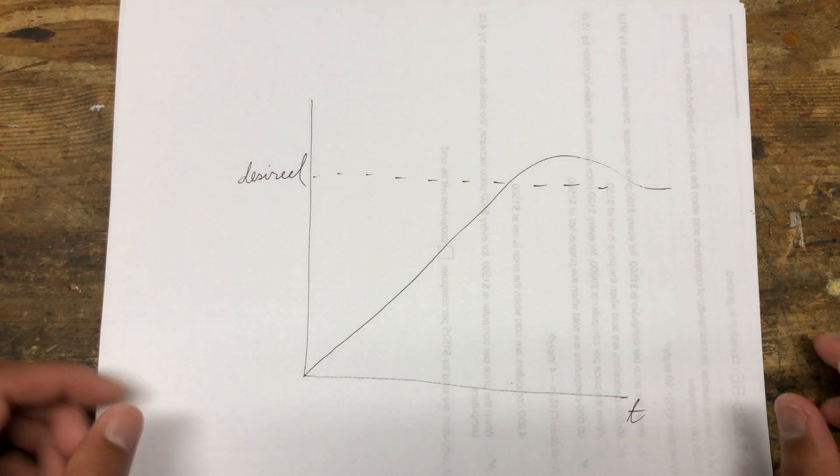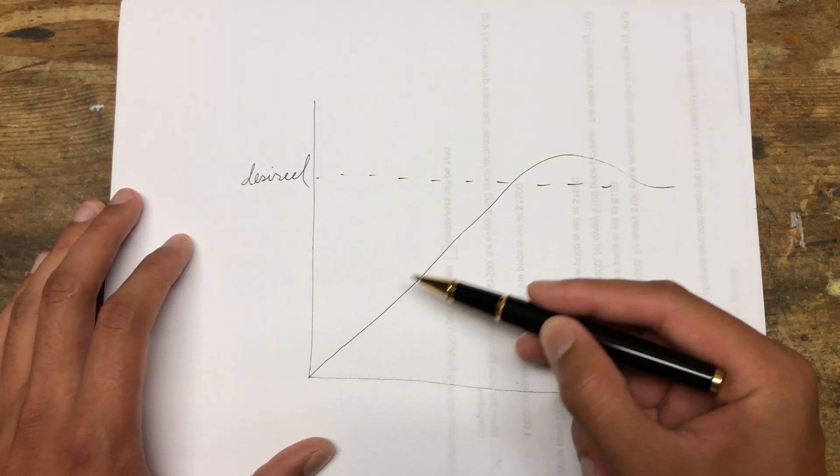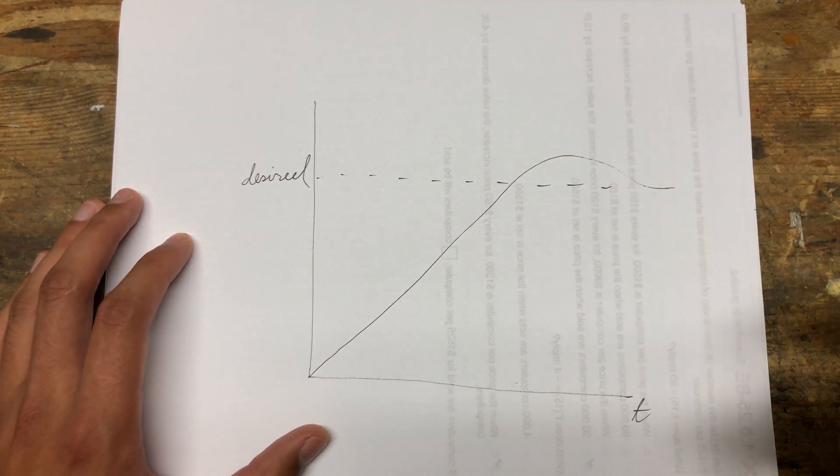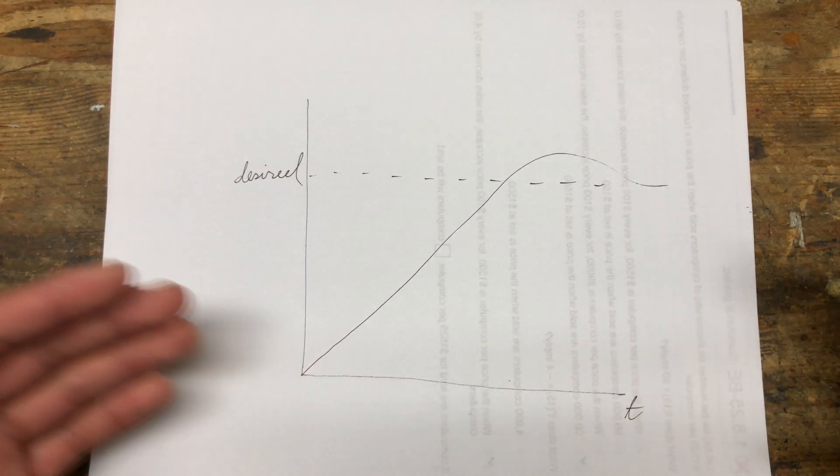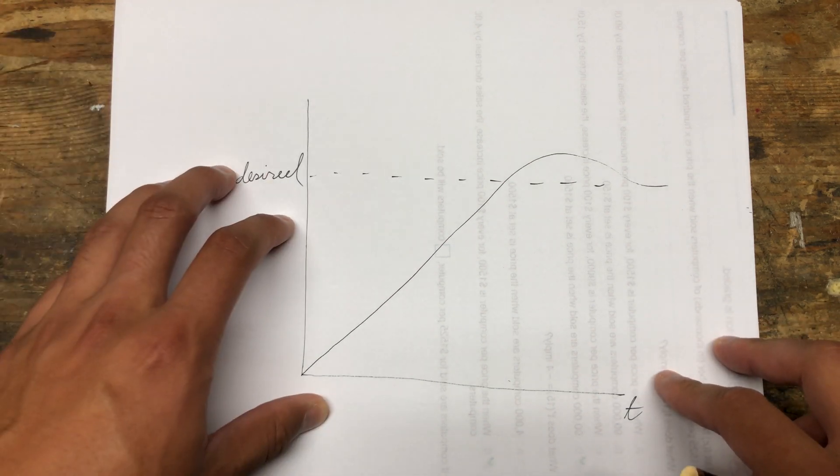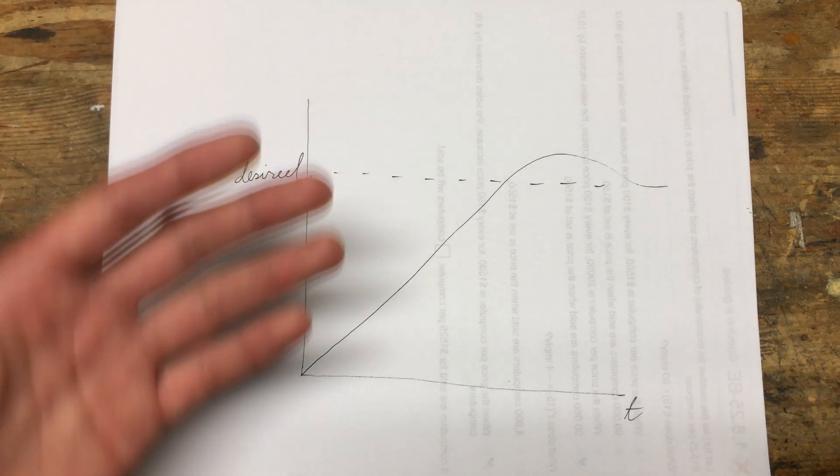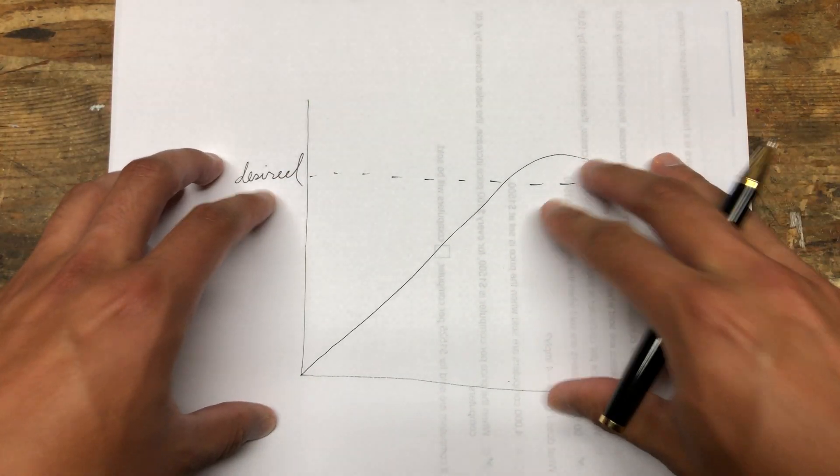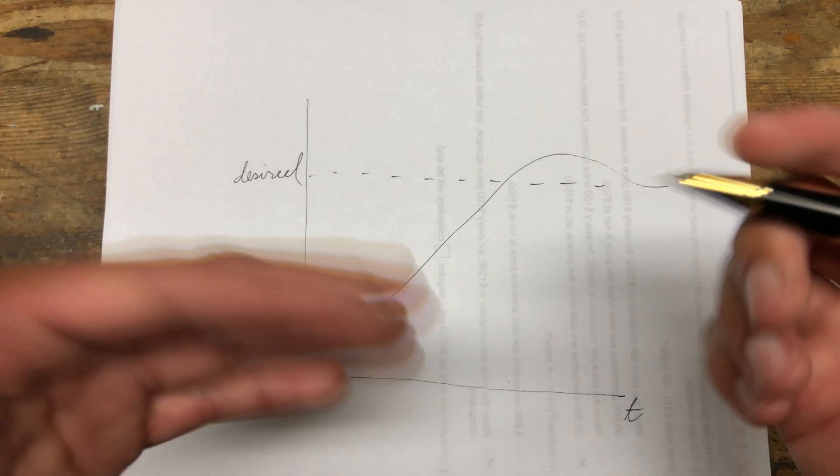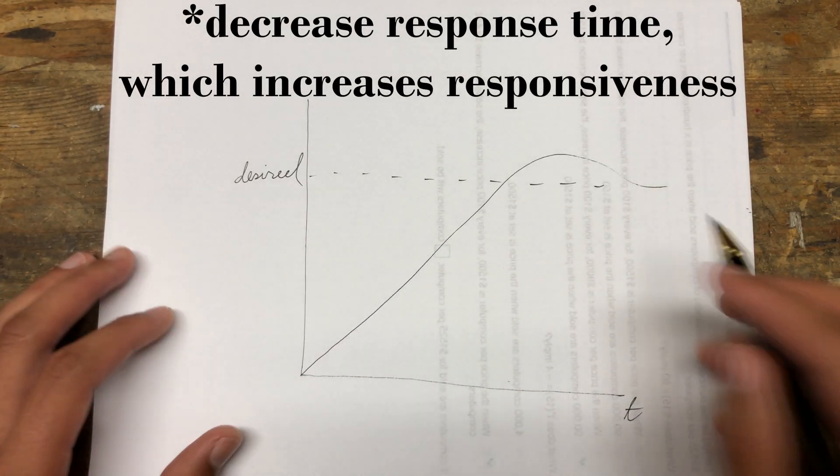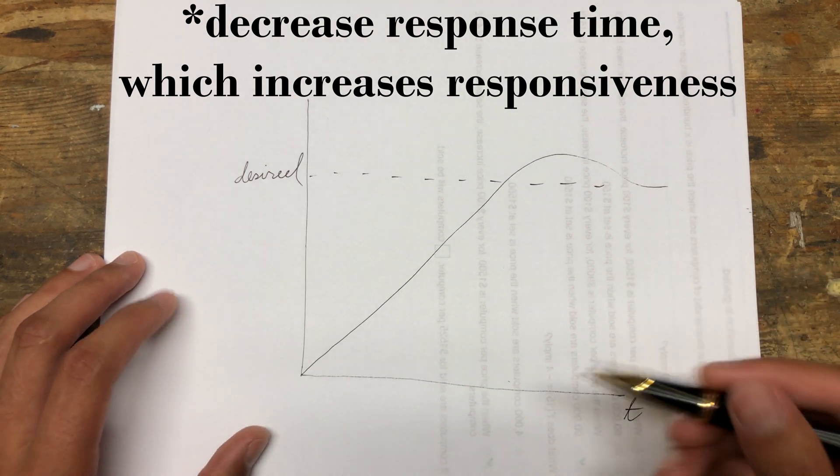We can maintain this same exact general shape with this same amount of overshoot and whatnot if we maintain the same ratio of P-gain and D-gain. However, if we increase the P-gain and D-gain by the same amount, say we double both of them, we can actually increase the response time while maintaining the same general characteristic.